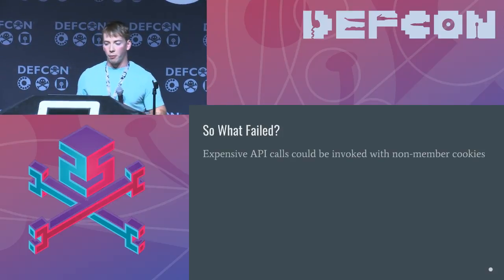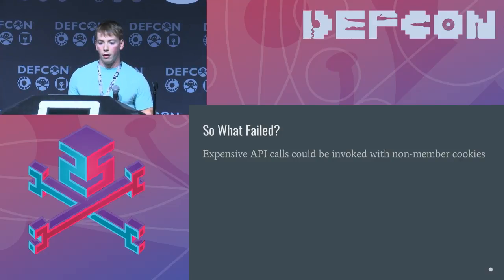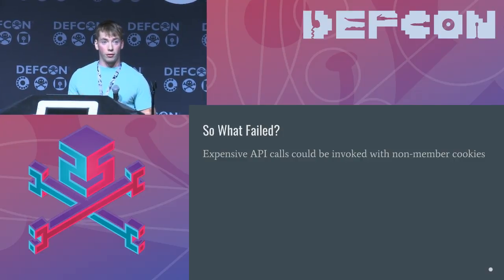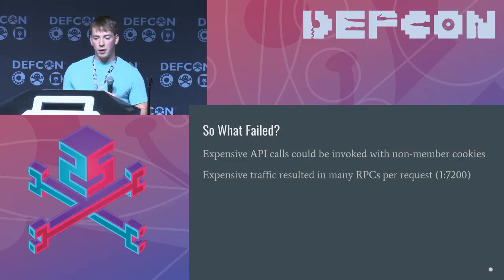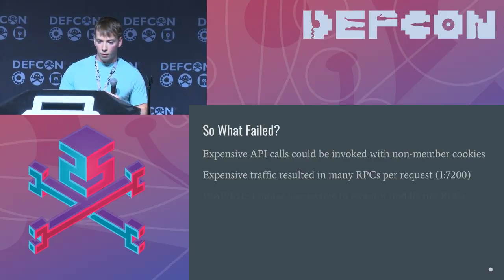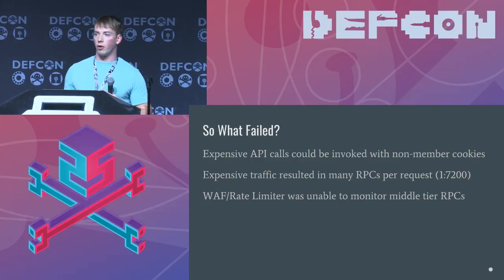So what failed? We identified expensive API calls that we could invoke with non-member cookies — basically unauthenticated session IDs like a J-session ID before you log in. We wrote a Selenium script and dumped about 5,000 cookies and used those in a round-robin fashion. The expensive traffic resulted in many RPCs — averaging about one call to the API gateway with 7,200 RPC calls between middle tier and backend services. And the WAF wasn't able to monitor those middle tier RPCs. It was looking at the gateway but wasn't configured to look at those middle tier and backend calls.